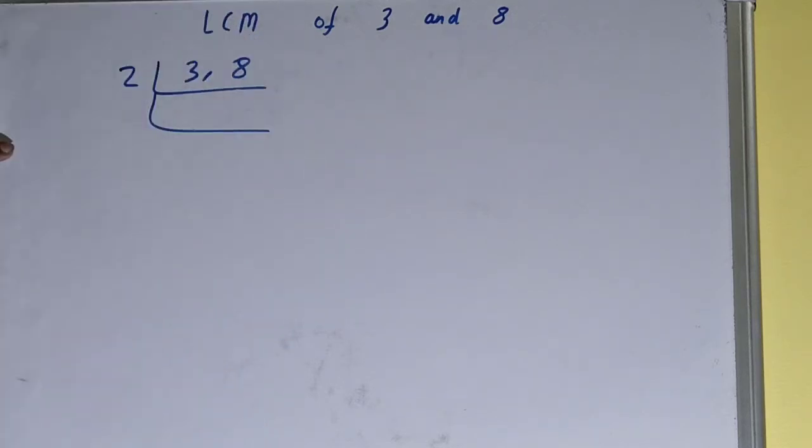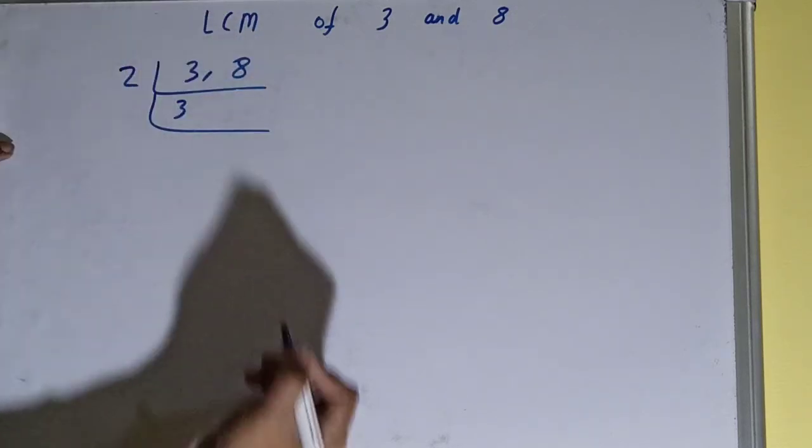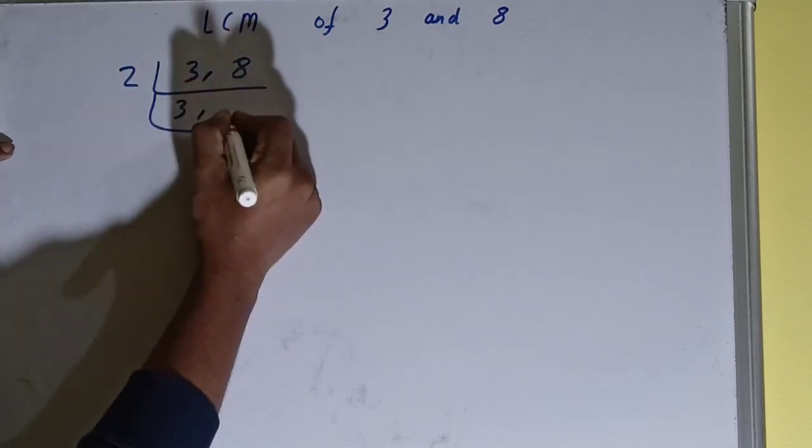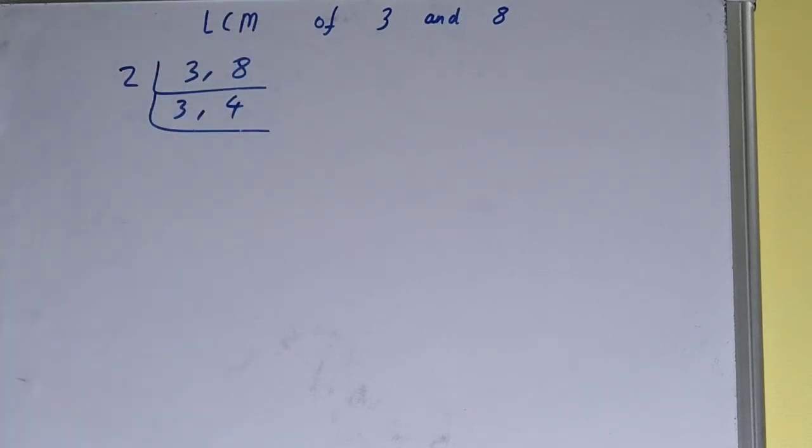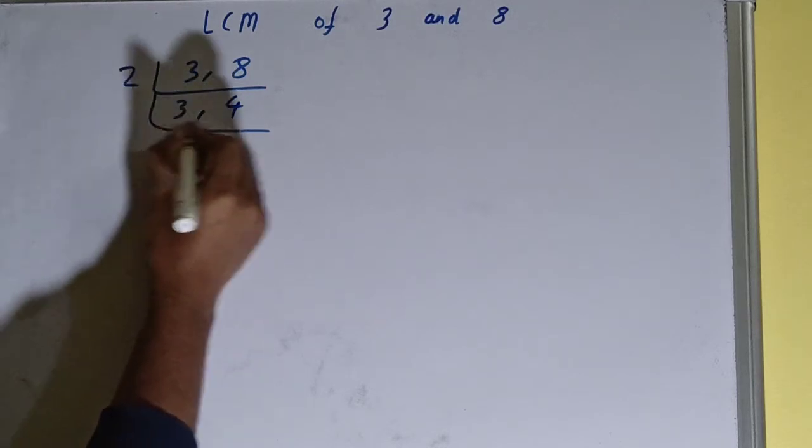Now because 3 is not divisible, we'll not touch it and we'll just copy it down. But this 8 is divisible by 2, so this will become as 4. Okay, again repeat the same thing. Is any of the numbers divisible by 2?